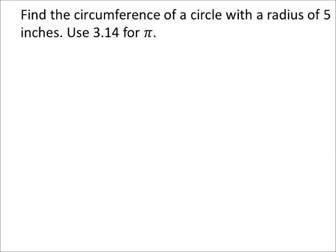Find the circumference of a circle with a radius of five inches, using 3.14 for pi. The circumference of a circle in terms of the radius is two radiuses multiplied by pi. On this problem, the radius is five inches.